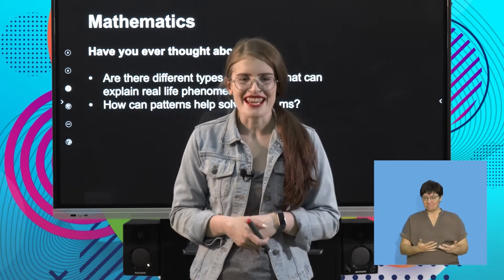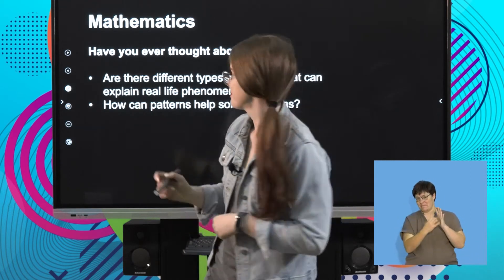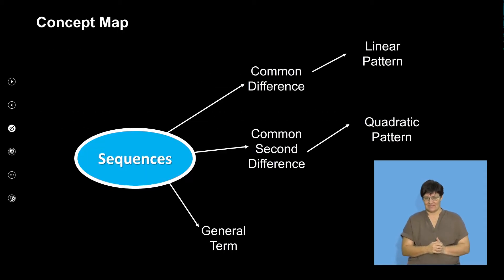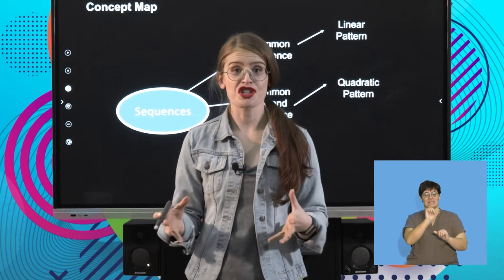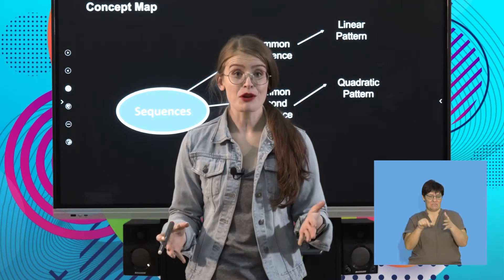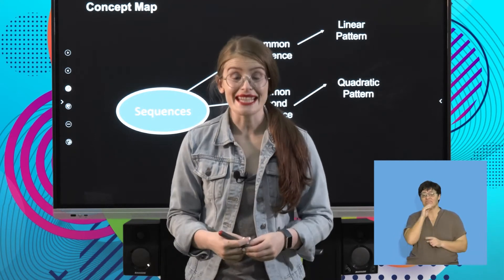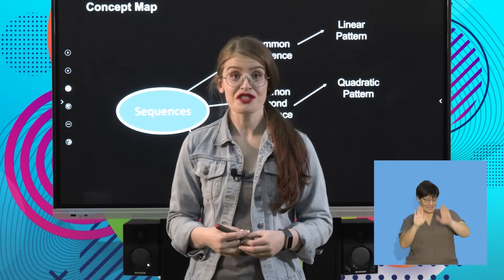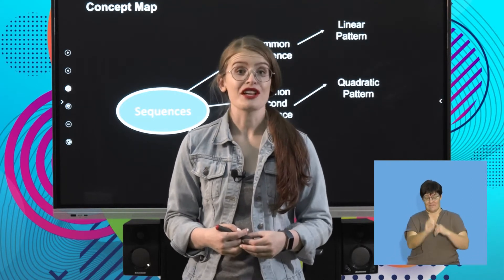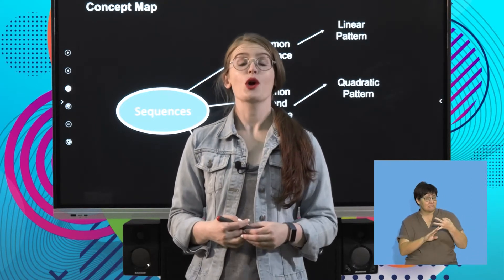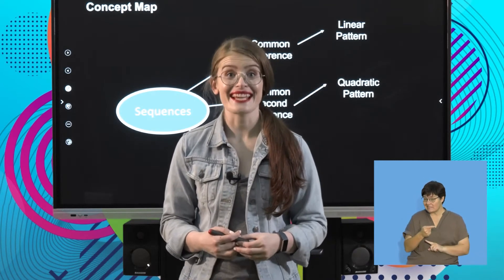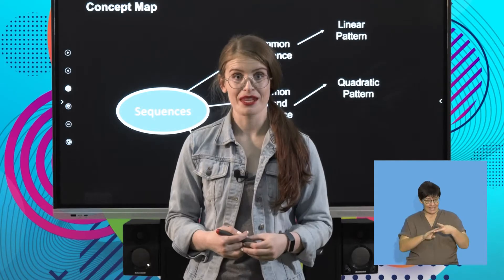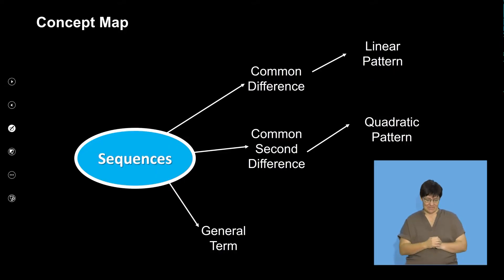Let's have a look at today's concept map. Firstly, I'm going to do a bit of revision on concepts that are relevant to sequences, just to make sure that we're all on the same page. Then I'm going to revise the definition of a linear pattern, where the first differences are equal. Then I'm going to introduce the concept of a quadratic pattern, where the second differences are equal. But first, let's have a look at some general definitions.